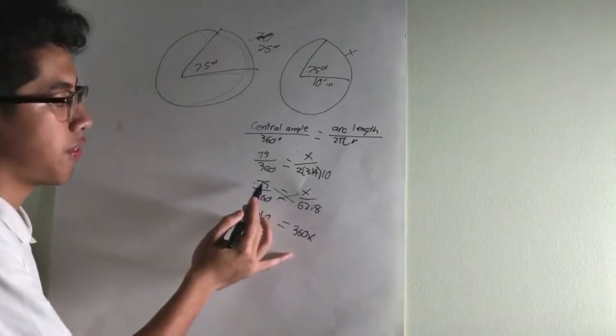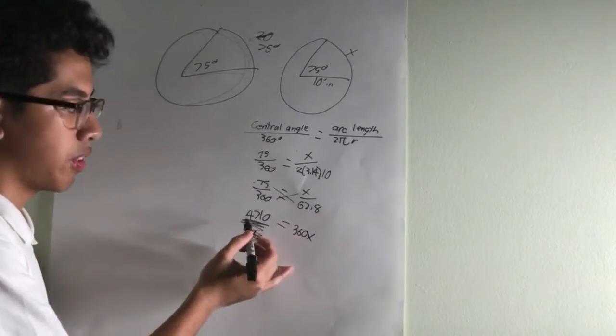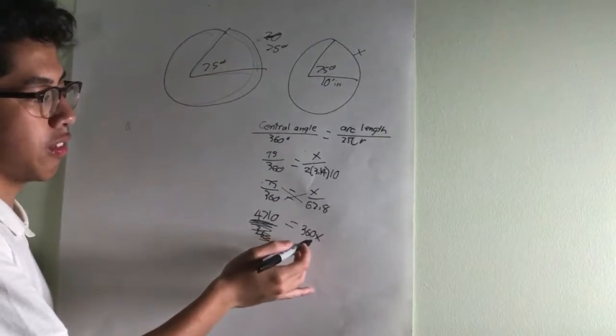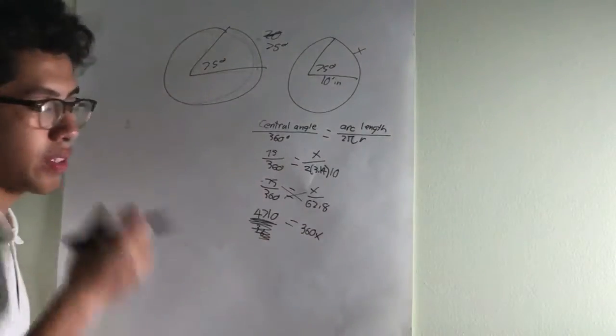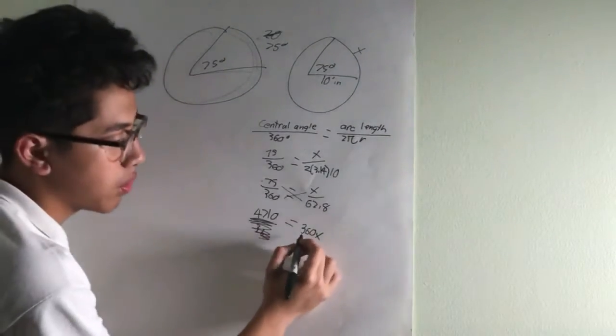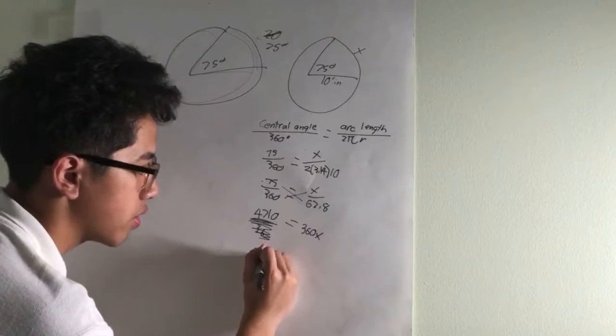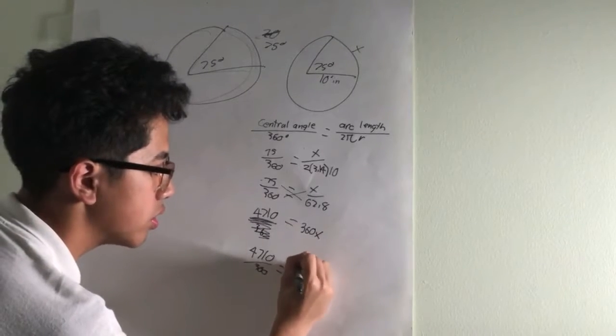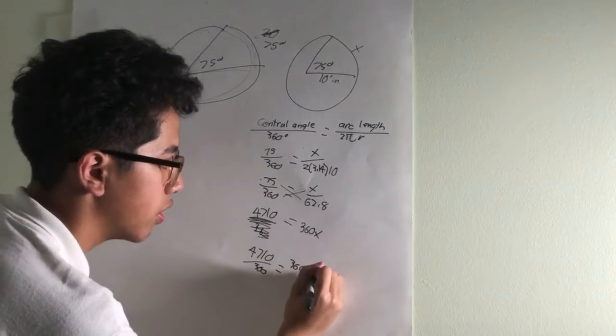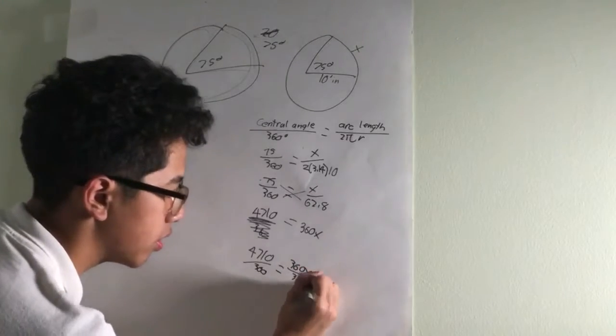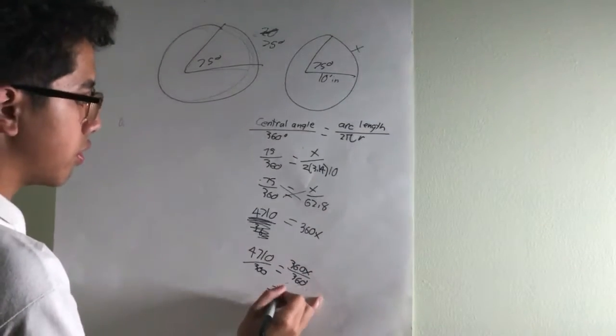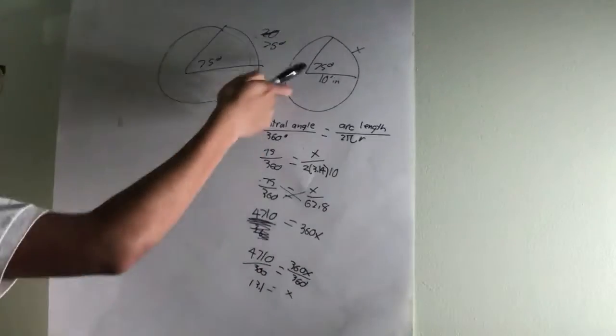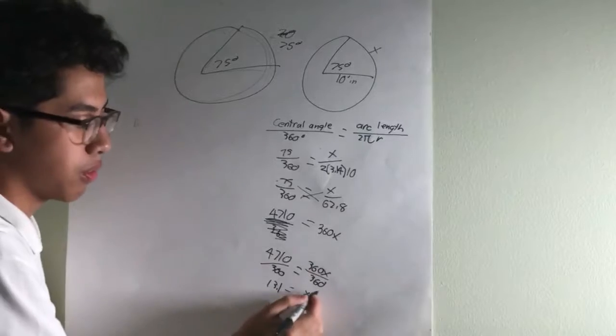So multiplied 75 by 60.8 would give you 4,710, or would be equal to 360x. So for basic algebra, you would divide both sides by 360. So 4,710 over 360 equals 360x over 360. That would give you 13.1. So the arc length of this circle would be 13.1.